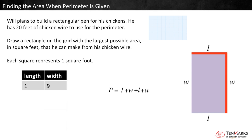1 plus 9 equals 10. If the length of the rectangle is 1 and the width of the rectangle is 9, the perimeter will be 20 because 1 plus 1 plus 9 plus 9 equals 20. Here are some other possible lengths. What would be the width for each of them?